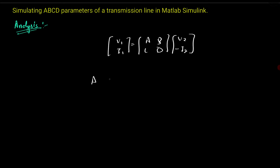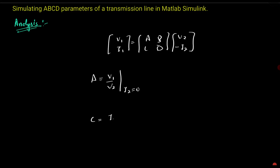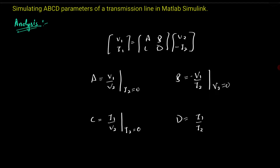A is the open circuit voltage ratio, that is V1 divided by V2 at I2 equal to zero. C is the open circuit transfer admittance, that is I1 divided by V2 at I2 equal to zero. B is the short circuit transfer impedance, equal to V1 divided by negative I2 at V2 equal to zero. D is the short circuit current ratio, that is I1 divided by negative I2 at V2 equal to zero.